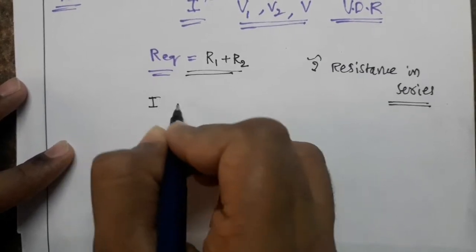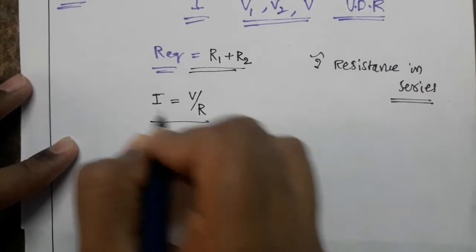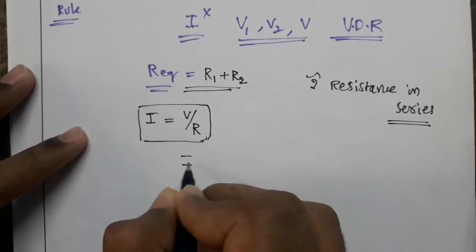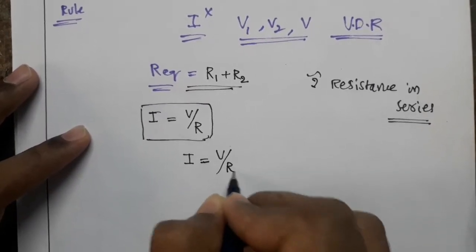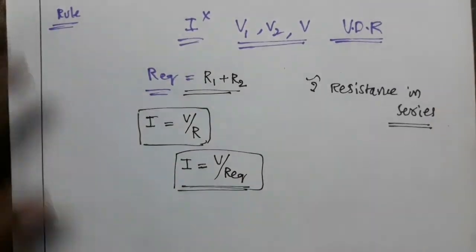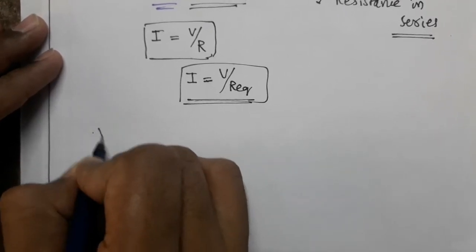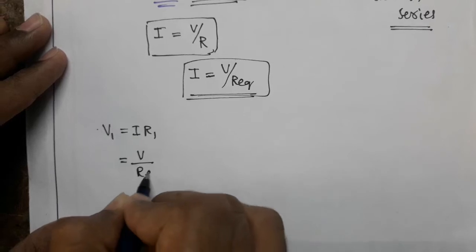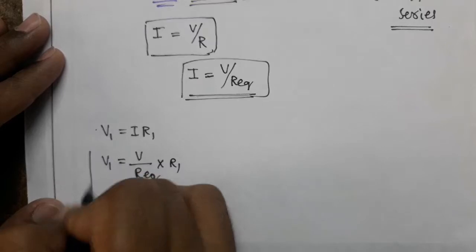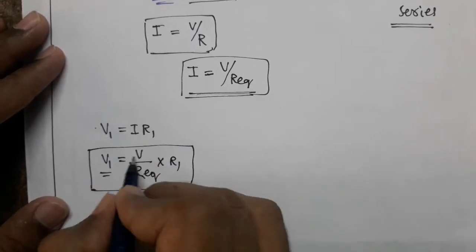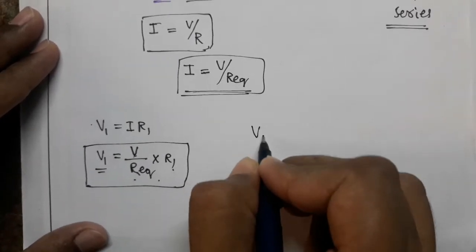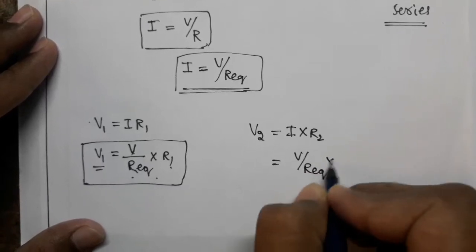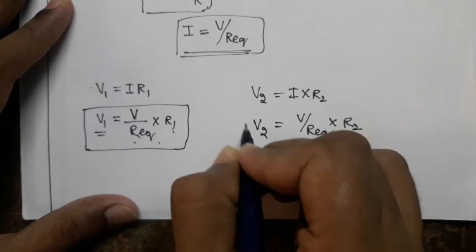For finding I, we know by Ohm's law V equals I times R. We have to find the total current flowing in the circuit, so I equals total voltage divided by R equivalent. By Ohm's law, V1 equals I into R1, that is V divided by R equivalent, multiplied by R1. Therefore V1 equals V divided by R equivalent, times R1. Similarly, V2 equals I into R2, where I equals V divided by R equivalent, so V2 equals V divided by R equivalent, times R2.